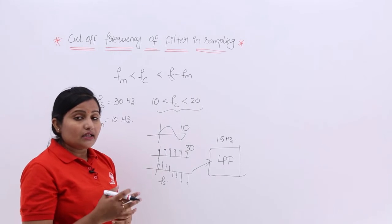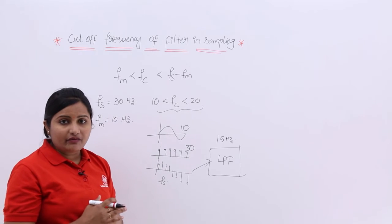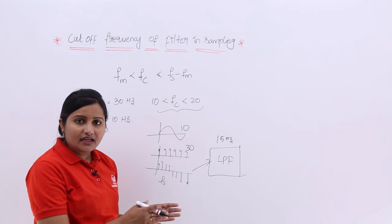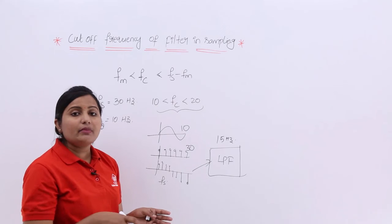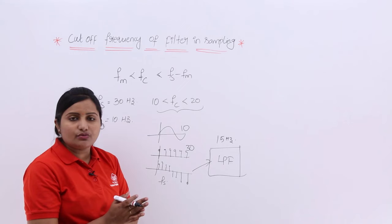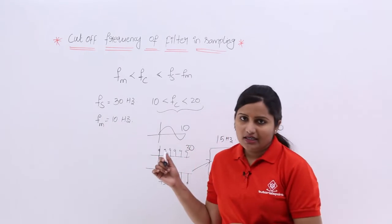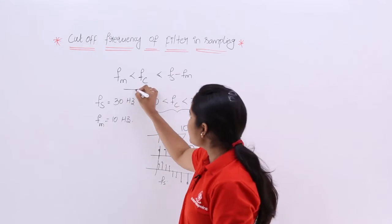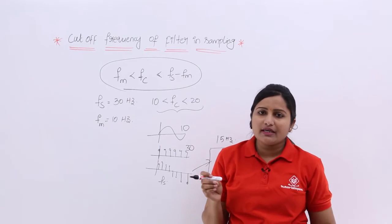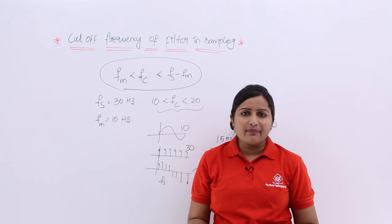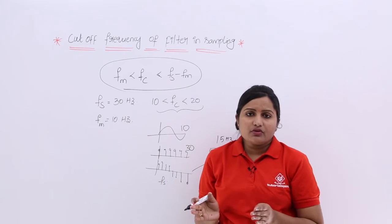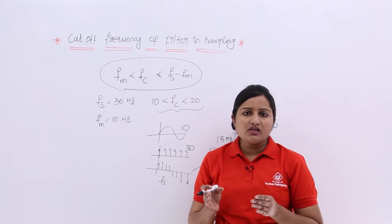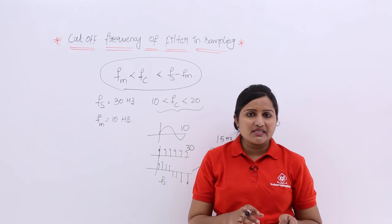Based on the cutoff frequency, your sampling rate is also going to change — how much sampling frequency you need to consider depends on the filter in your path. If the cutoff frequency of the filter is a certain value, then what sampling frequency you need to consider is affected by it. The key point to keep in mind is: whenever you are doing sampling, after sampling the sampled signal goes through some filters, and those filters need to follow some cutoff frequency, otherwise frequency components are going to be missed and you will not be able to reconstruct your message signal.